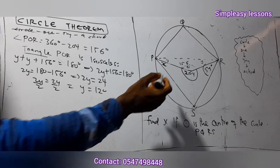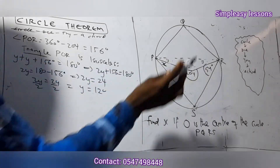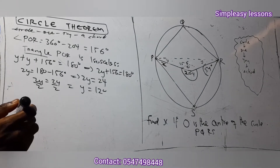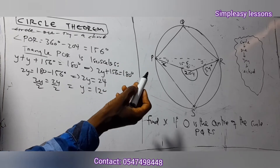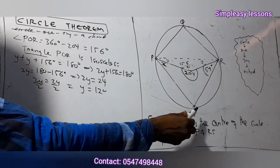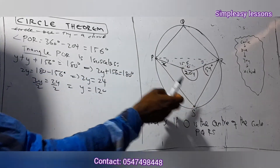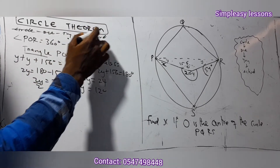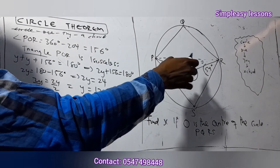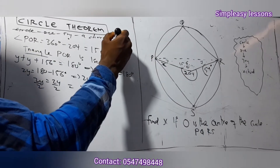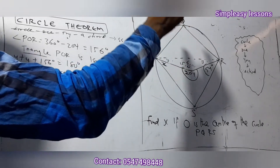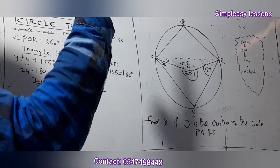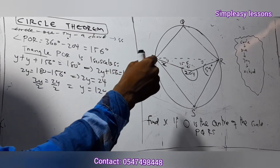So y equals 12, which means both base angles are 12 degrees. Now we are finding the value of x. We have another triangle — triangle PSR — but first let's check if there's a chord.